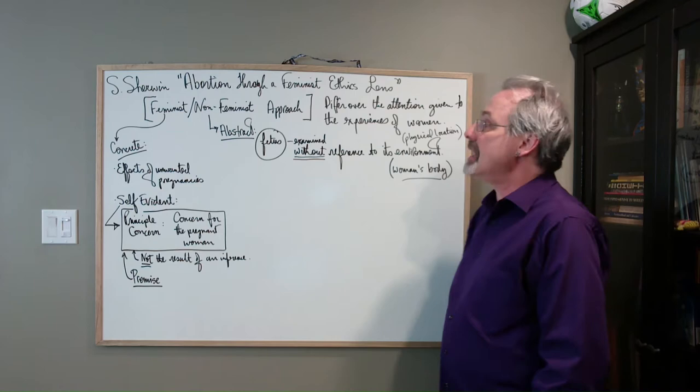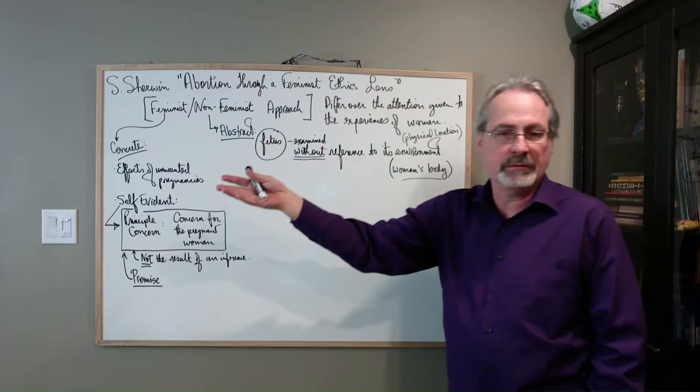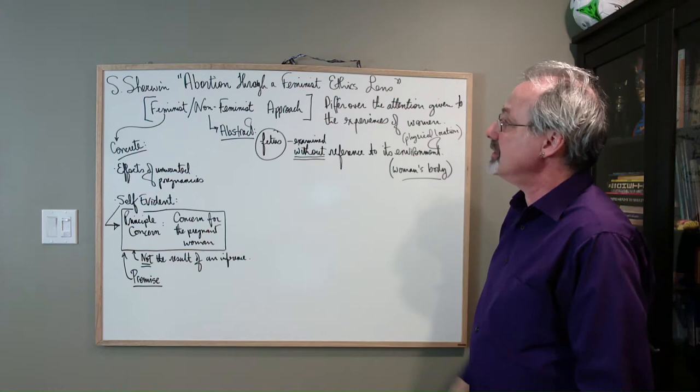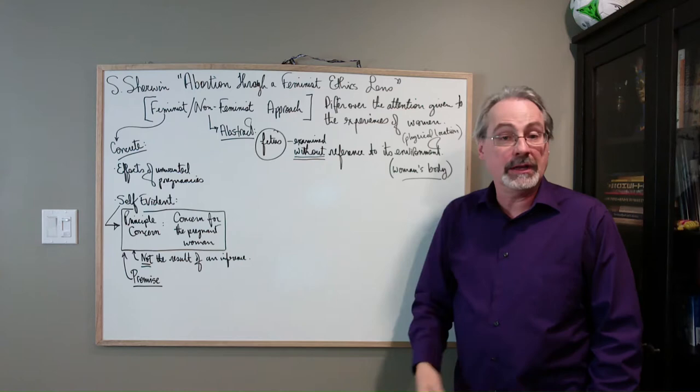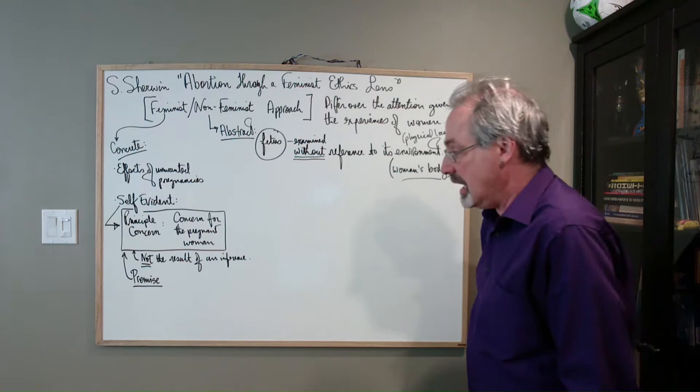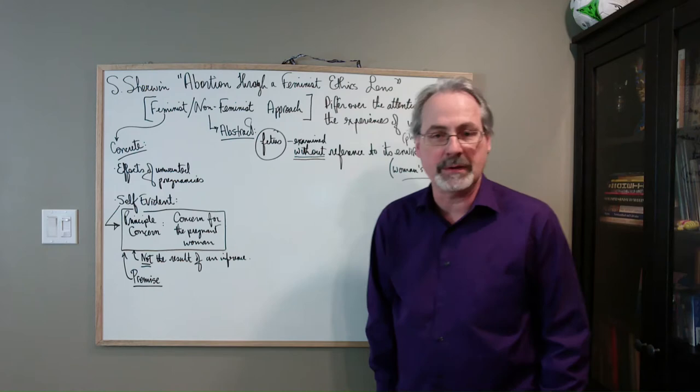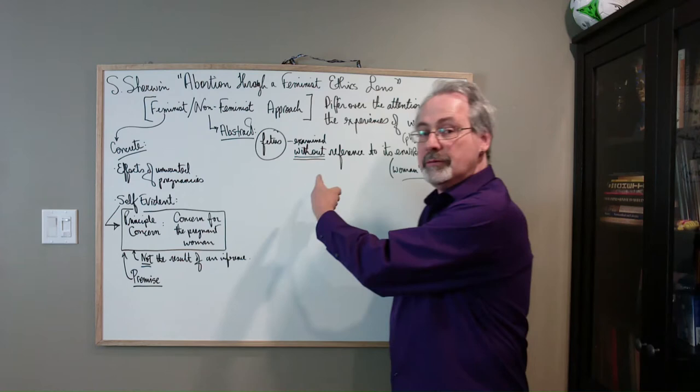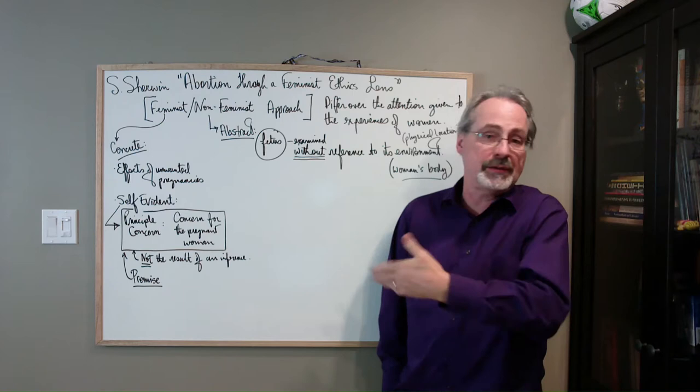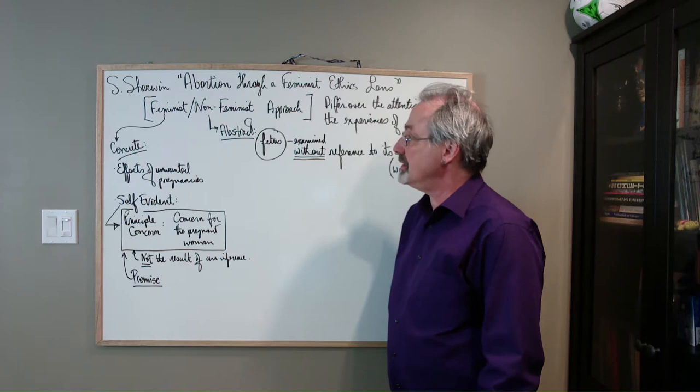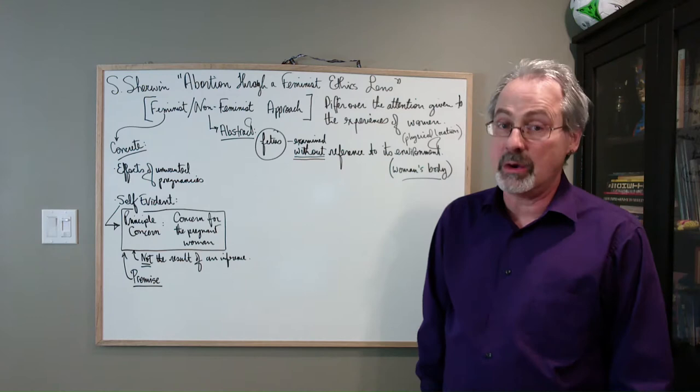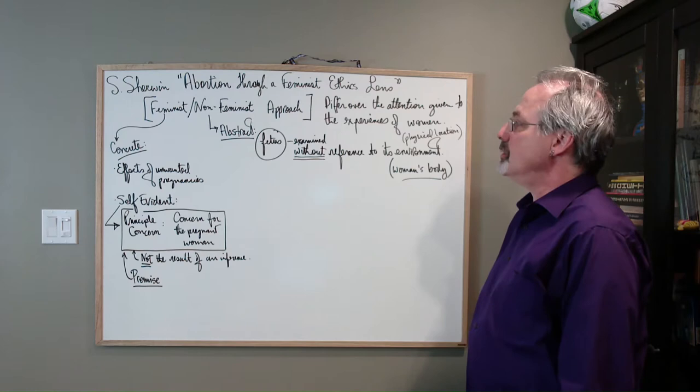She wants to look at abortion through what she calls a feminist ethics lens. That doesn't mean that all feminists agree with this, but we're going to have a look at what Sherwin thinks that a feminist ethics lens looks like and what the abortion issue looks like when you look at it through that. This article is an excellent example of approaching a philosophical question because there are different ways to approach it, and she lays this out quite nicely and contrasts herself with non-feminist ways. So the first thing to keep in mind is this is her view as to what a feminist approach is. I'm not saying that all feminists would agree with her, but it gives you a good insight into approaching philosophical problems and how they look very different depending on the angle that you take on it.